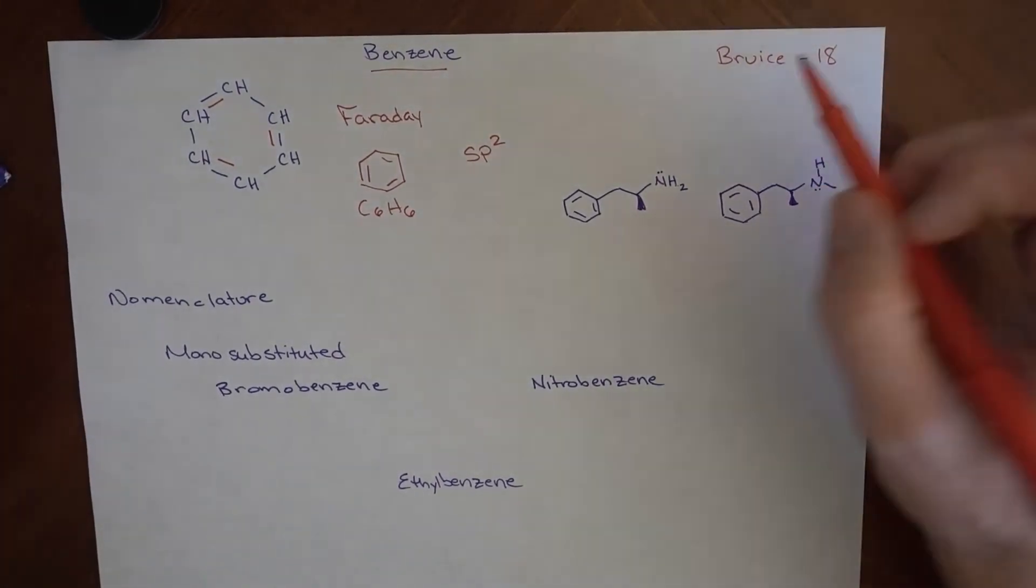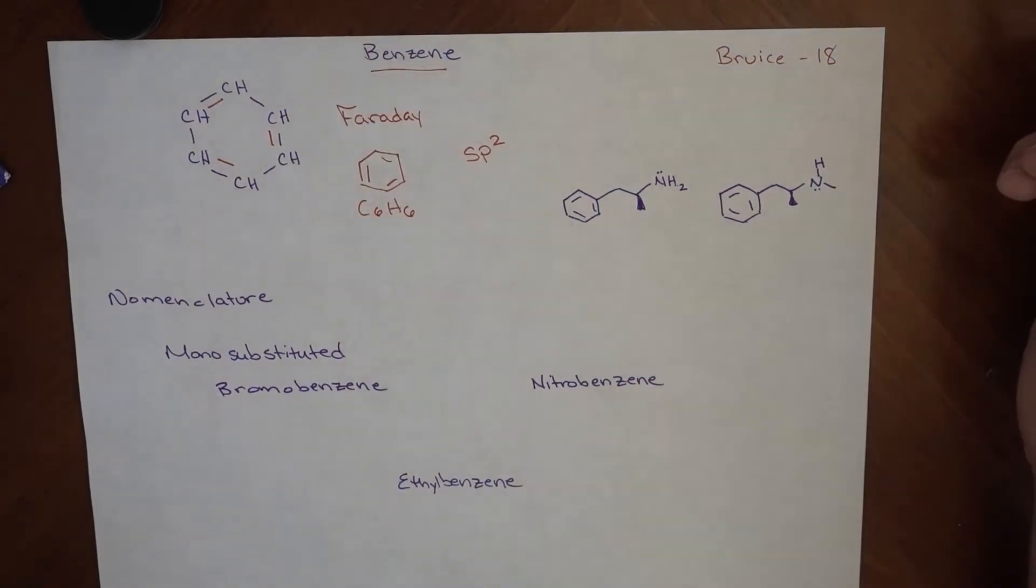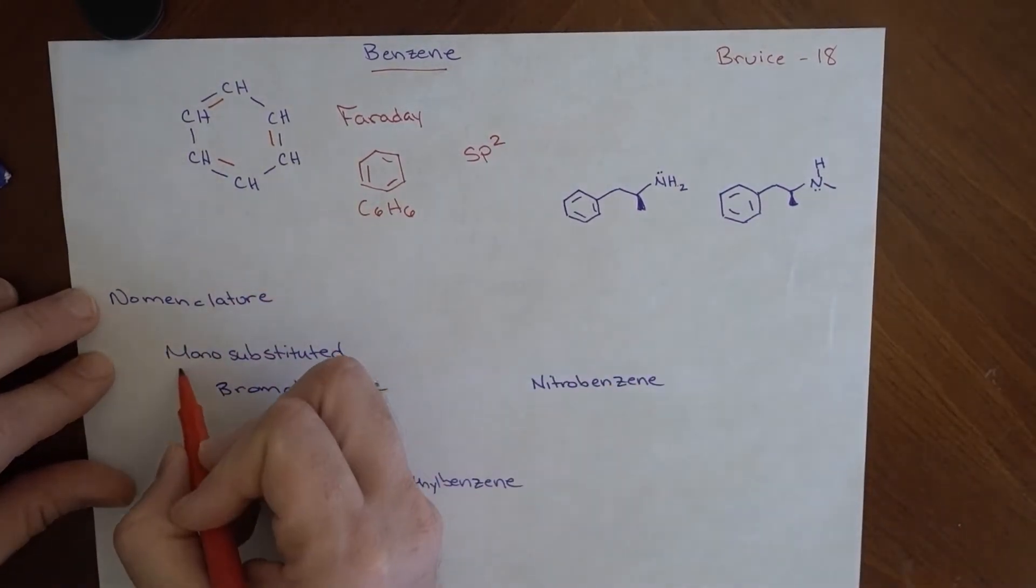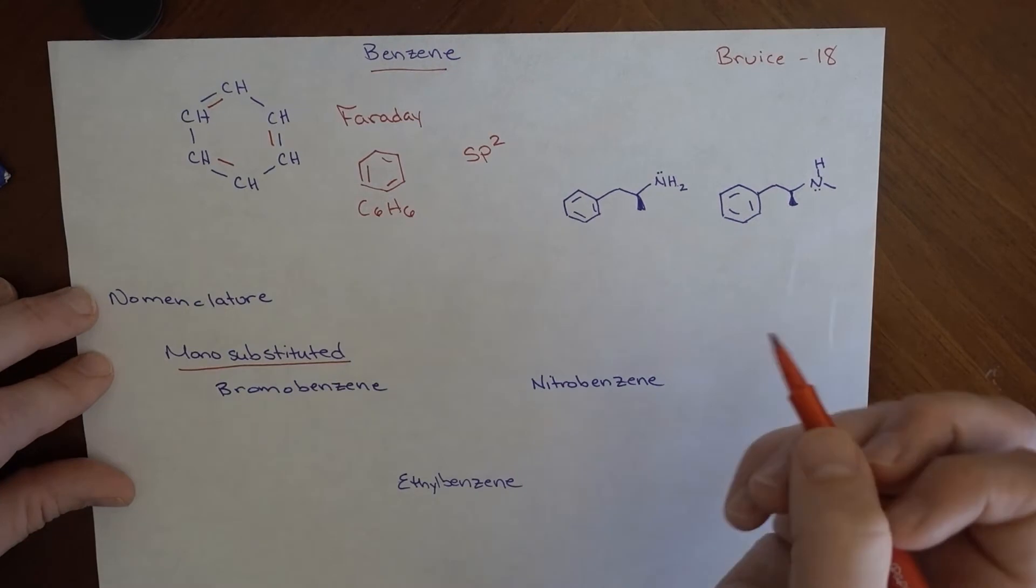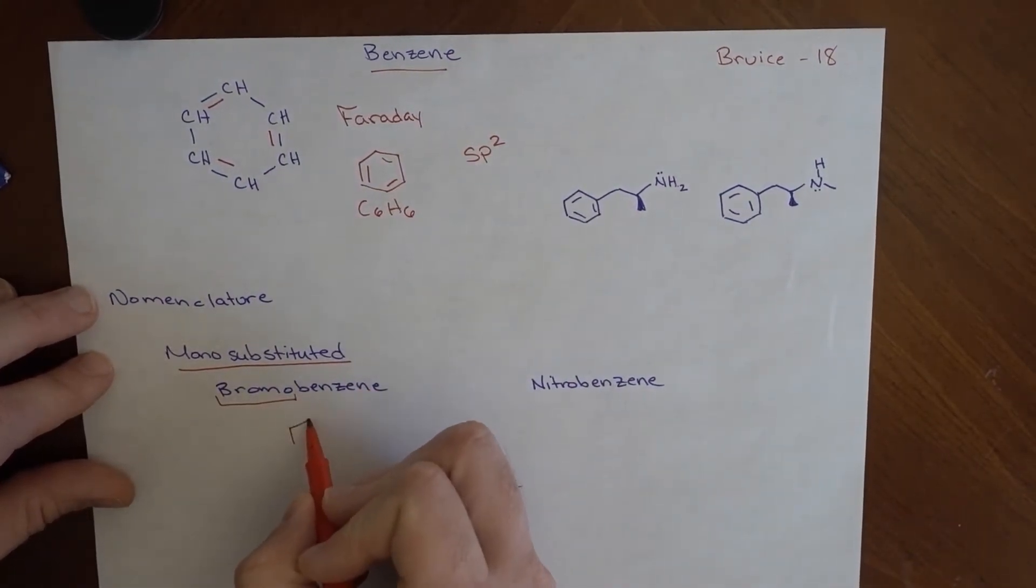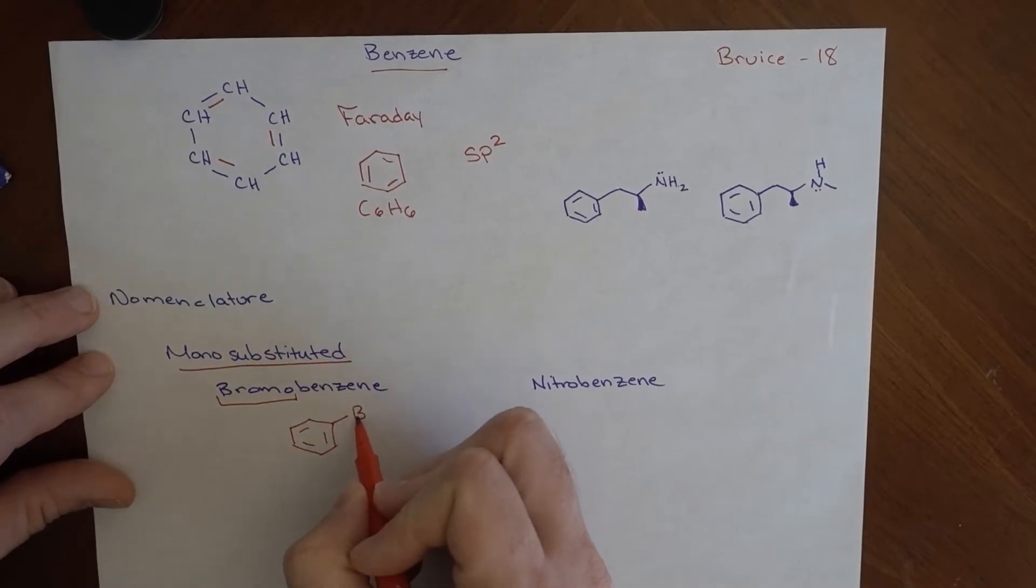Now it's in a lot of different things. It's a very stable arrangement of carbon atoms. So we're going to end up seeing it a lot, and you already have. So how do we call it? What's the nomenclature for this? Well, if it's monosubstituted, that means there's just one thing on there. We just name the thing that's on there.